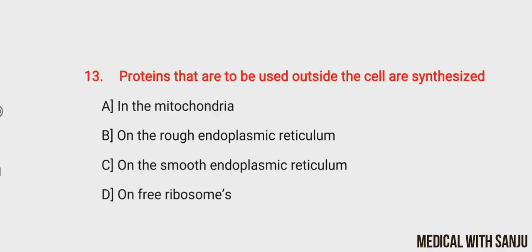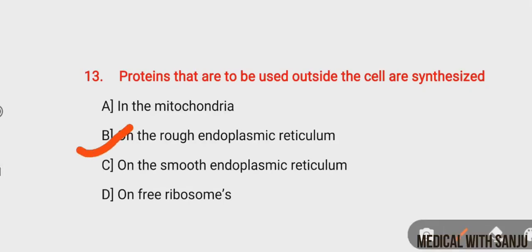Question number thirteen: proteins that are to be used outside the cell are synthesized — option A: in the mitochondria, option B: on the rough endoplasmic reticulum, option C: on the smooth endoplasmic reticulum, option D: on free ribosomes. The right answer is option B, on the rough endoplasmic reticulum. Ribosomes are attached to the outer surface of the rough endoplasmic reticulum and perform protein synthesis.